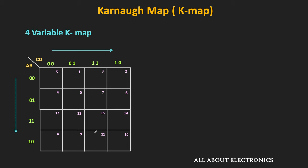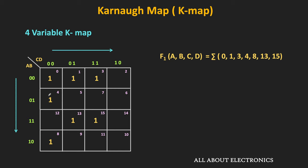Now let us see how to map a Boolean function in the kmap. Let's say f1 is a four-variable Boolean function containing certain minterms. For mapping, whatever minterms are present in the function, we write a 1 in those cells. So here, we will write 1 in cell numbers 0, 1, 3, and 4, and then in cell numbers 8, 13, and 15. That is how we map the function in the kmap.